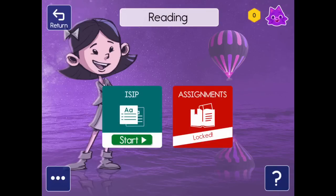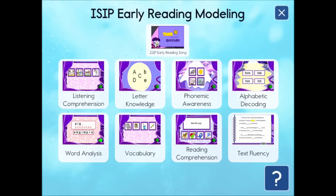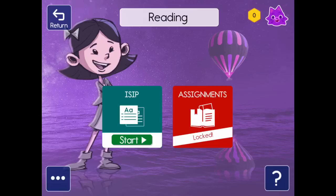ISIP is computer adaptive, or personalized, depending on whether your student is answering a question correctly or incorrectly. If a question is answered correctly, the next question will be more difficult, and if it's answered incorrectly, the next question will be less difficult. This provides a clear picture of what each student knows and is ready to learn next. Depending on where your student is and what your student's strengths and weaknesses are, they will see particular types of activities.